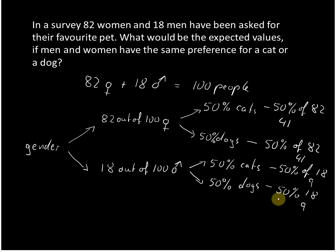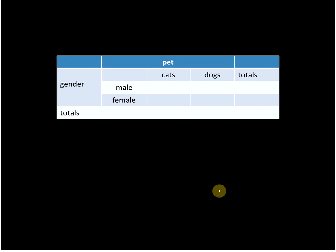Our expected numbers can be put into what is called a contingency table. Let me just quickly change the color here.